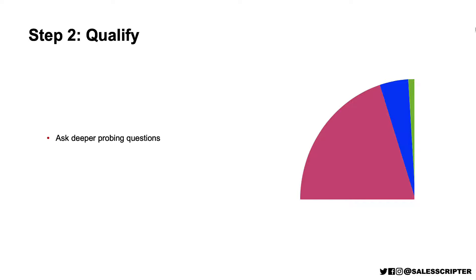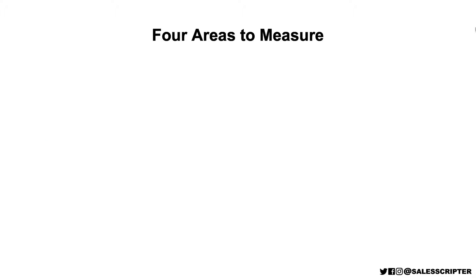We want to ask deeper probing questions to figure that out. Our goal is to figure out how real the deal is — how qualified the prospect is, how likely they are to purchase, and how soon that could be. In order to qualify the prospect, we want to ask questions and measure their answers in four different areas. First, we want to gather information in the area of need to purchase.